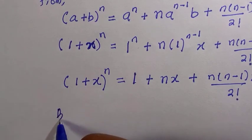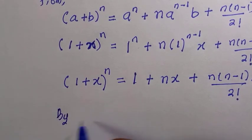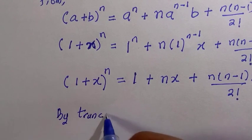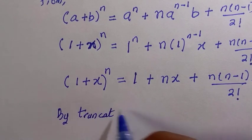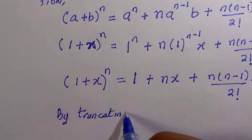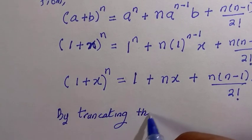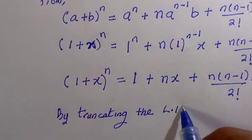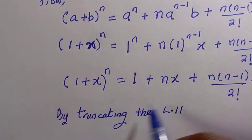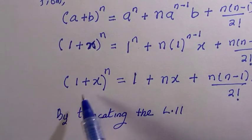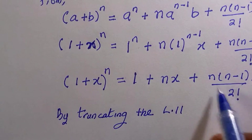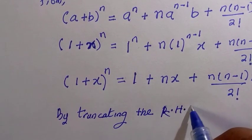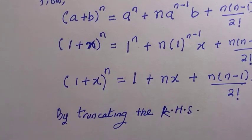But at this stage, we are going to truncate the right hand side of these equations, and we are going to limit ourselves to the first two terms of this expansion, which is 1 plus nx.